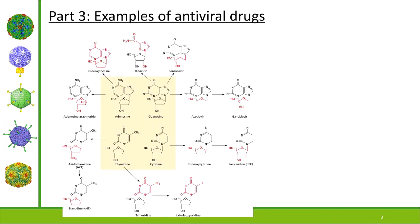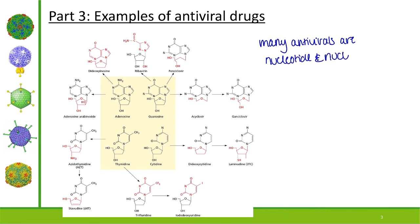We're going to start with one of my favorite pictures from our textbook. If we focus on the yellow part in the middle, those are the four bases attached to sugars. Surrounding that yellow square, we can see different types of drugs — all of these antiviral drugs are analogs of the bases. Many of our antivirals are nucleotide and nucleoside analogs, and many of them work via chain termination.